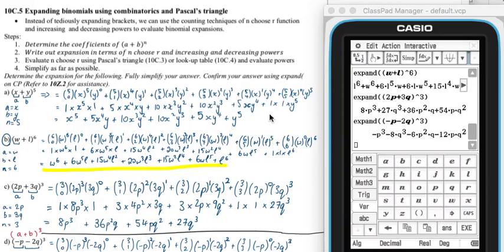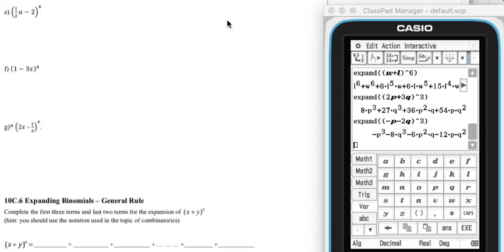In this video we'll be looking at example E, expanding binomials using combinatorics and Pascal's triangle. We firstly assess our A and B coefficients in our binomial. This part is our A, this part is our B, and here is our N. So we write A, B, and N is 4, negative 2 and a half A.